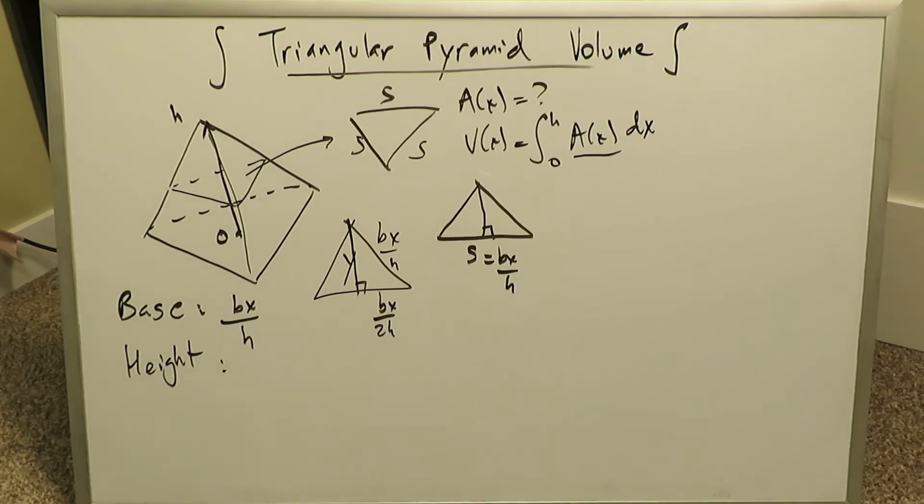I'm solving for that Y using the Pythagorean theorem. A squared plus B squared is equal to C squared. Y squared plus this square, which is B squared X squared over 4H squared, is equal to C squared, which is B squared X squared over H squared.